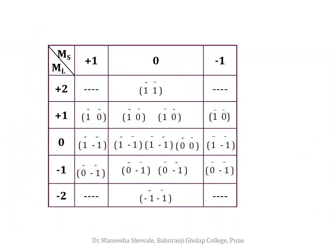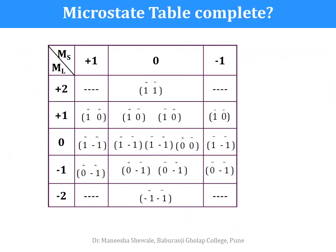After writing all the microstates in the table, we can check whether the microstate table is complete. This can be done by adding the microstates in each row. In the first row we have 1 microstate, then 4, 5, 4, and 1. When we add these, we get the answer as 15, which is the same number we got using the factorial formula.